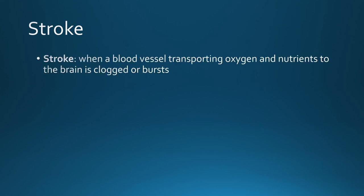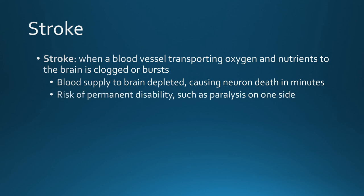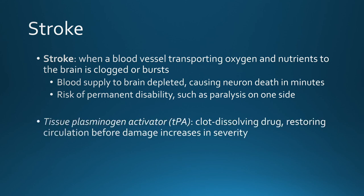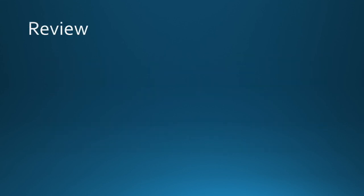Transport of nutrients to the brain occurs via blood vessels. Strokes happen when a blood vessel transporting nutrients such as oxygen is clogged or bursts, depleting blood supply to the brain and causing neuron death even within minutes. A risk of permanent disability such as paralysis on one side can occur. Clogs may result from blood clots or other particles in the bloodstream. Clot-dissolving drugs such as tissue plasminogen activator (TPA) are used to restore circulation before damage worsens. Anticoagulant drugs can also help reduce the likelihood of clots forming.